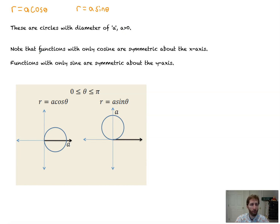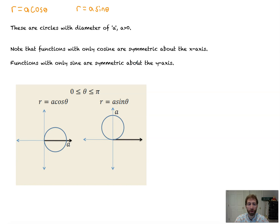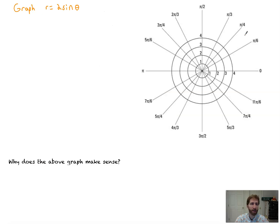A couple of important things to note. Polar functions with only cosine in them will be symmetric about the x-axis. That will carry through in other types of functions as well beyond circles. Functions with only sine are symmetric about the y-axis, which makes sense because sine is the y-value and cosine is the x-value on our unit circle. Here's the general picture — you would graph the entire graph from 0 to pi. Unlike r equals a number where we needed 0 to 2 pi, here we only need 0 to pi. Let's see one in action.